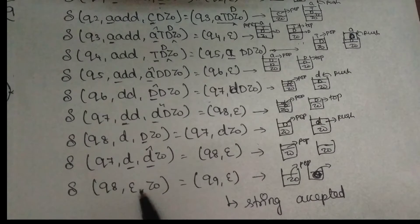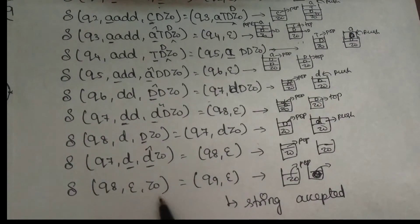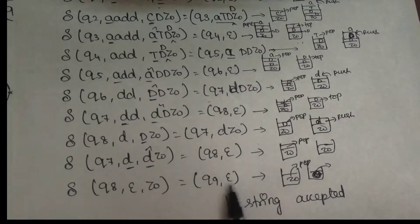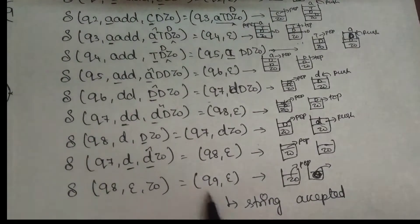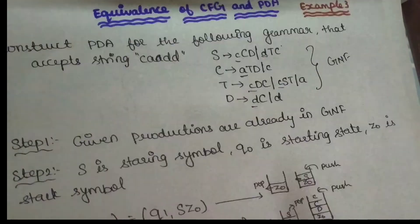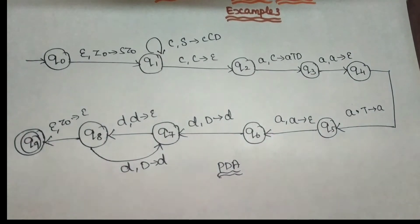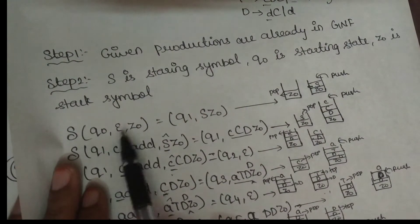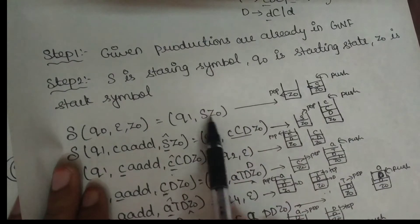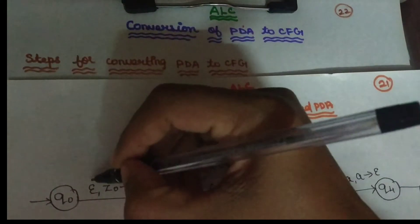The input symbol is done. The stack has Z-naught — this is the last condition. Z-naught is popped and we reach the final state. The stack is empty, so we reach the final state. The stack is empty. The input string C-A-A-D-D is accepted by the Pushdown Automata. This is how you construct the Pushdown Automata. You can see the Pushdown Automata transition diagram.